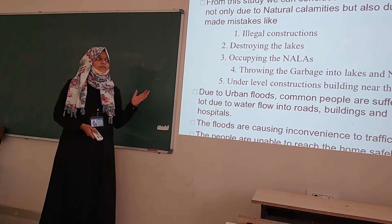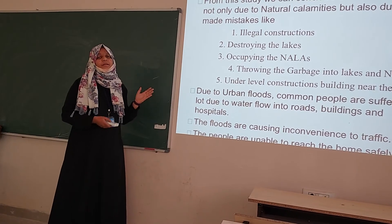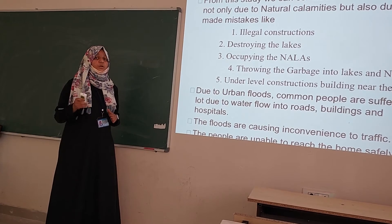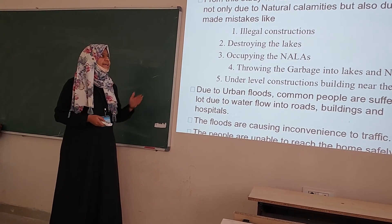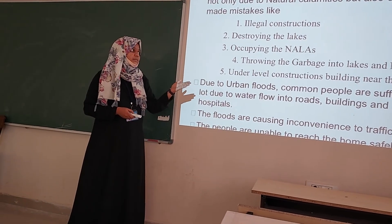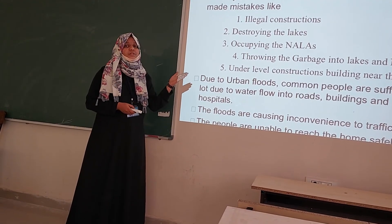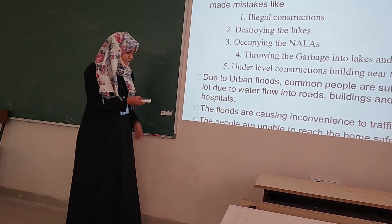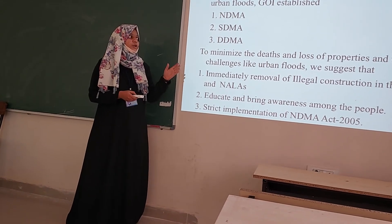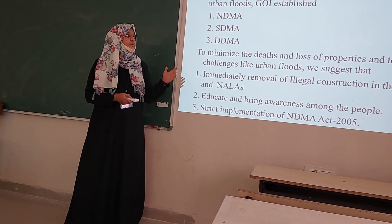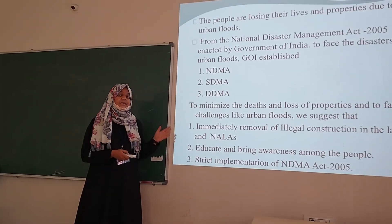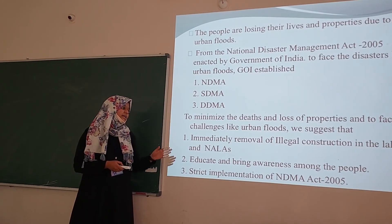Conclusion and Suggestions. From this study we can conclude that urban floods are not only due to natural calamities but also due to human mistakes like illegal constructions, destroying the lakes, occupying the drainage channels, throwing garbage into the lakes and drains, and under-level construction of buildings near the lakes. To minimize deaths and loss of properties and to face the challenges of urban floods, we suggest immediate removal of illegal constructions near the lakes and drains, and educating and bringing awareness among the people.